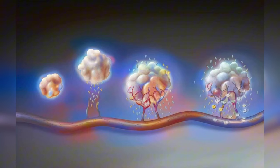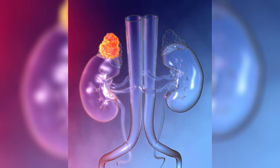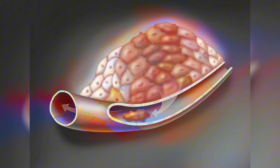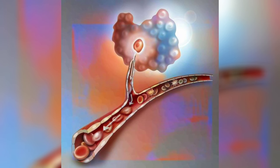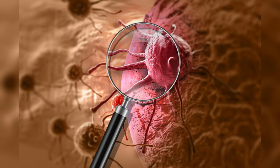When a cell's DNA is altered, it starts to divide rapidly, forming a mass of cells called a tumor. Tumors can be benign or malignant. Benign tumors are non-cancerous and stay in one place, while malignant tumors can invade surrounding tissues and spread to other parts of the body.